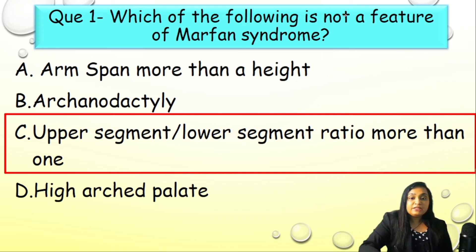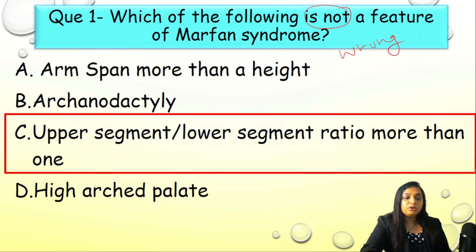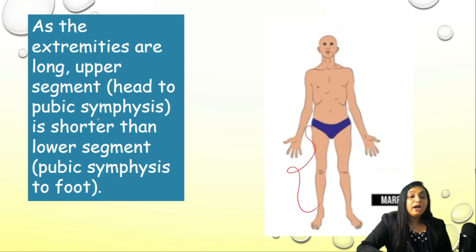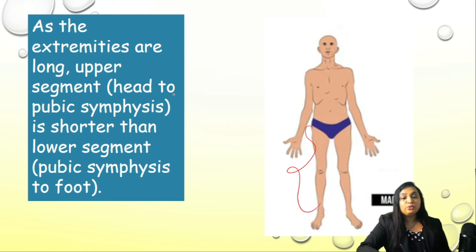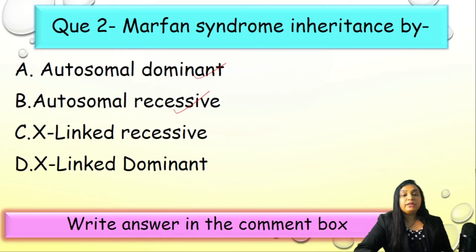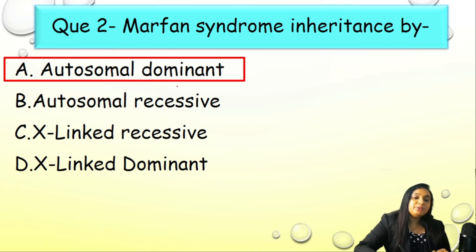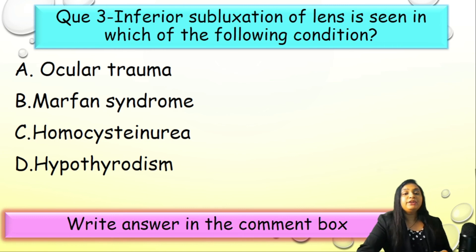The correct answer to Question 1 is C — upper segment to lower segment ratio more than one. In Marfan syndrome the extremities are too long, so the head-to-pubic symphysis distance (upper segment) is shorter relative to the lower segment, meaning the ratio will NOT be greater than one. Question 2: Marfan syndrome inheritance — is it A) autosomal dominant, B) autosomal recessive, C) X-linked recessive, or D) X-linked dominant? Correct answer: A, autosomal dominant, while homocystinuria is autosomal recessive.